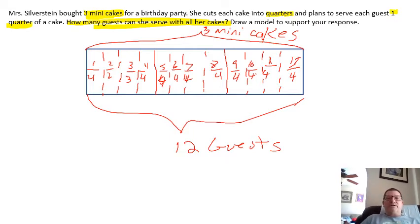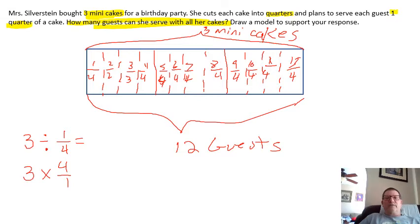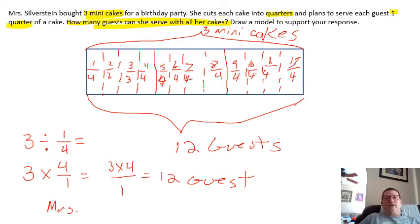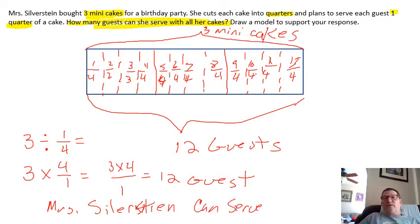That's where we're using the tape diagram. Now let's see if we can support this with a numerical problem. We had three mini cakes and want to divide those mini cakes into quarters. We're dividing by a fraction, so we want to turn this to a whole number — we know one-quarter inverted is four over one. Then we change to multiplication: three times four over one equals twelve pieces. That means we can have twelve guests. So we can say that Miss Silverstein can serve twelve guests.